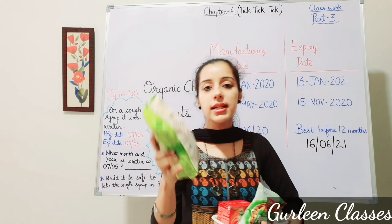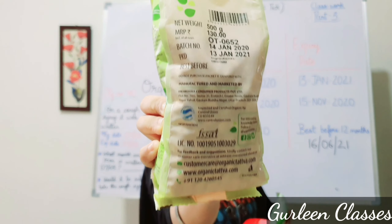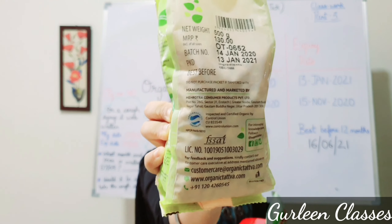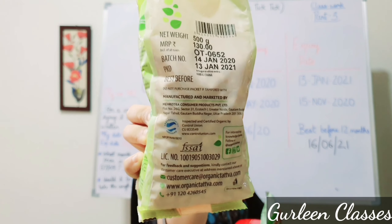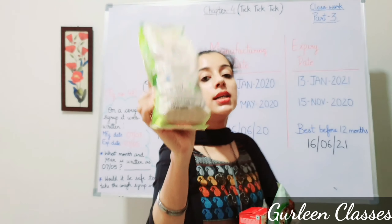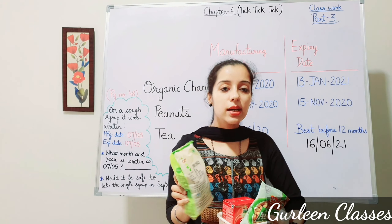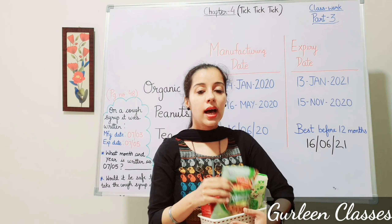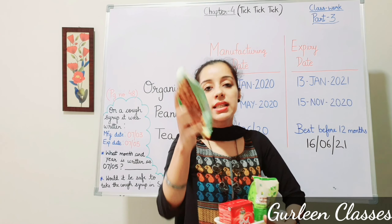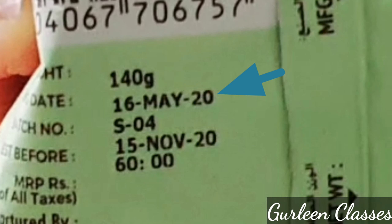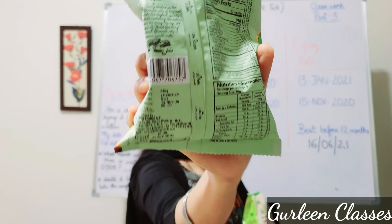On the back of the organic chana packet, you can see the manufacturing date is 14th January 2020 and the expiry date is 14th January 2021. The second item I purchased is peanuts. The manufacturing date is 16th May 2020 and the expiry date is 15th November 2020.